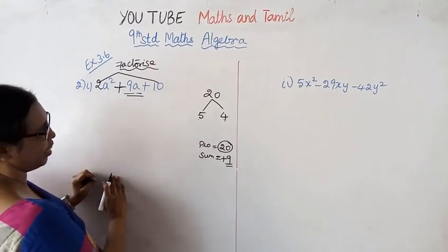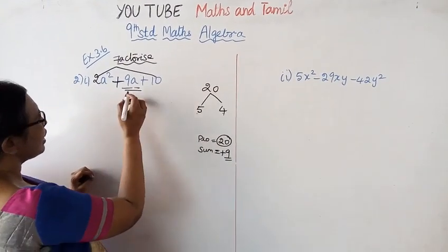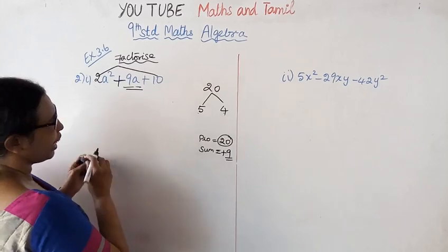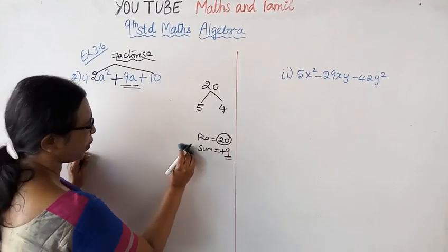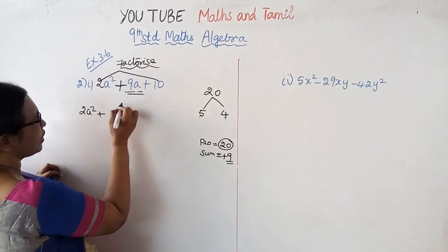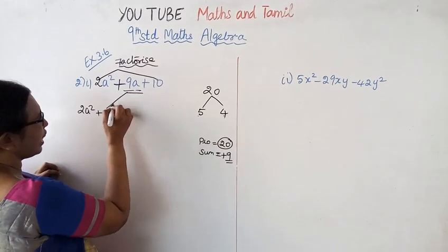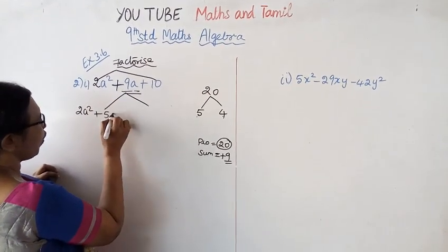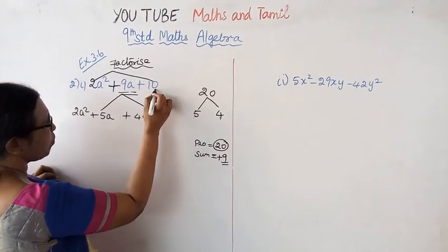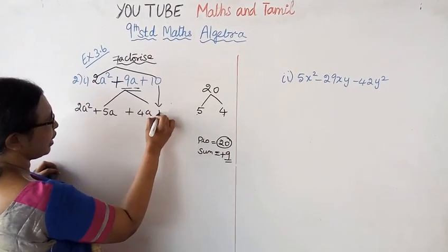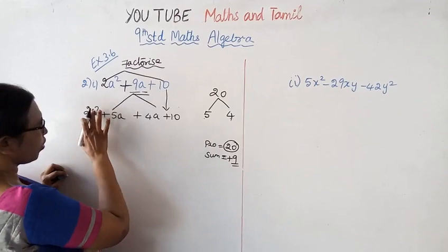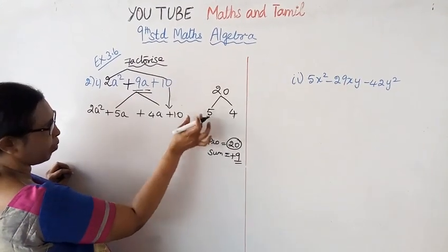Let's check the problem. Nine is confirmed. Now we split the middle term: a squared plus 9a plus 20 will be split as a squared plus 5a plus 4a plus 20. Five a plus four a gives nine a — that checks out.